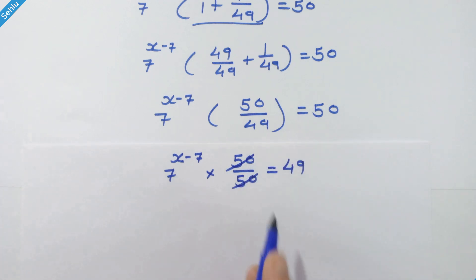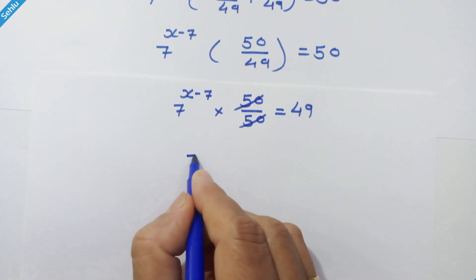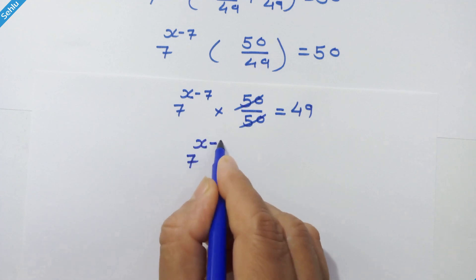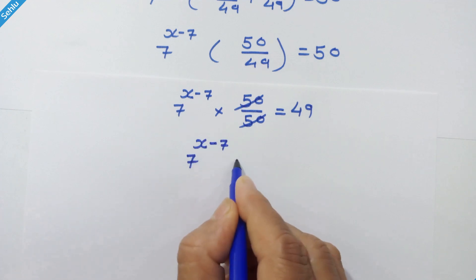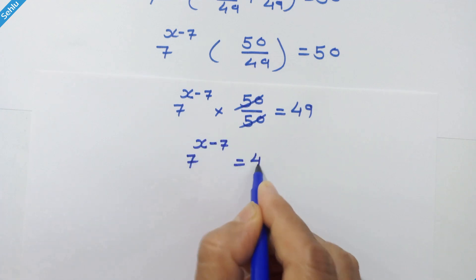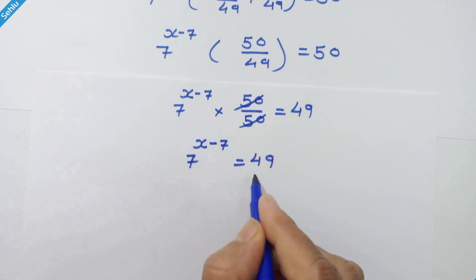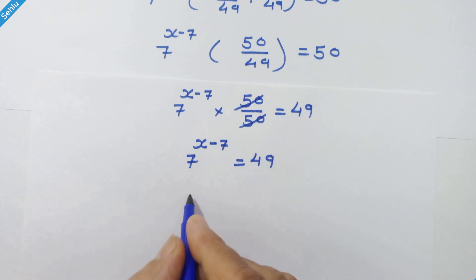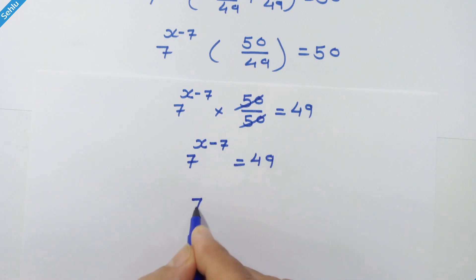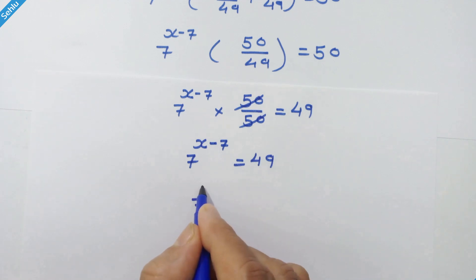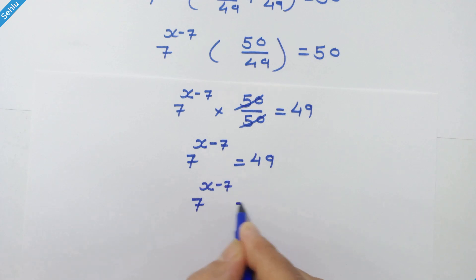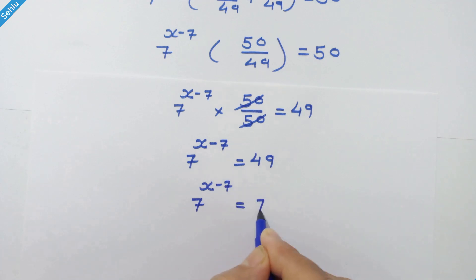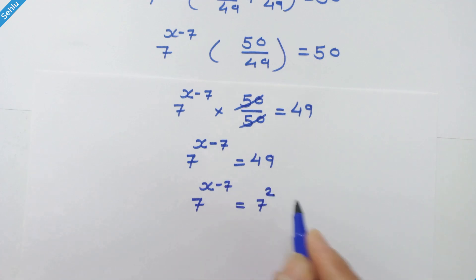The 50s cancel, so we have 7 raised to x minus 7 is equal to 49. Now 49 is 7 square, so we can put it as 7 raised to x minus 7 is equal to 7 square.